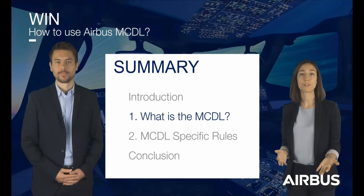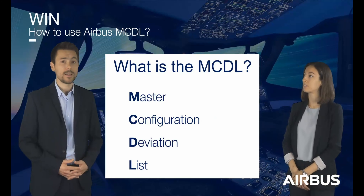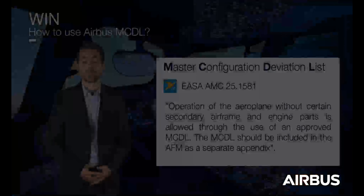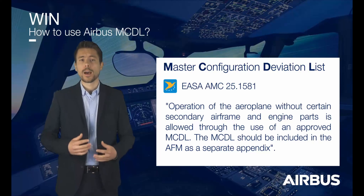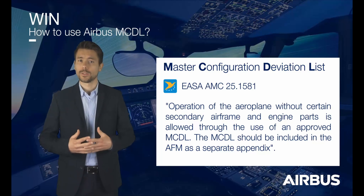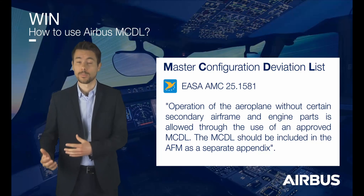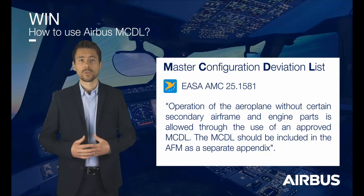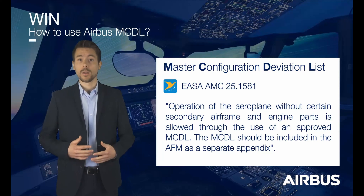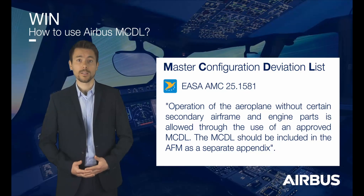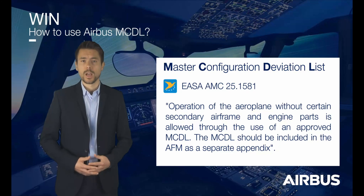First of all, what is the MCDL? MCDL stands for Master Configuration Deviation List. If we take a quick look at the regulation, as per the relevant EASA AMC, operation of the airplane without certain secondary airframe and engine parts is allowed through the use of an approved MCDL. The MCDL should be included in the AFM as a separate appendix. Therefore, by definition, the MCDL is an approved list of secondary airframe and engine parts that may be missing for the flight.